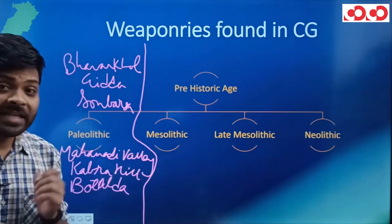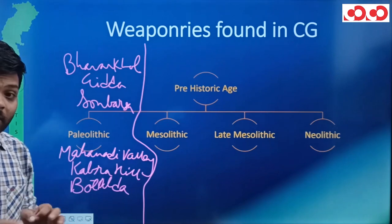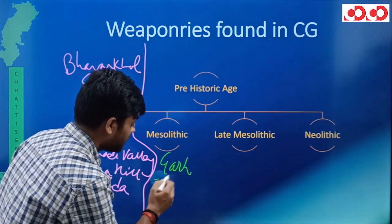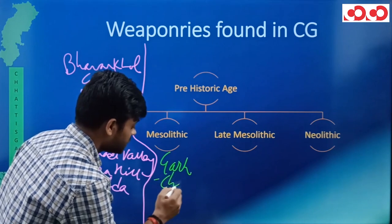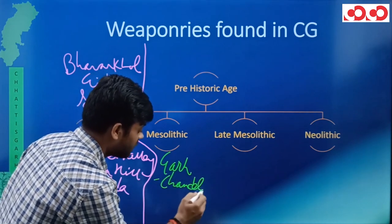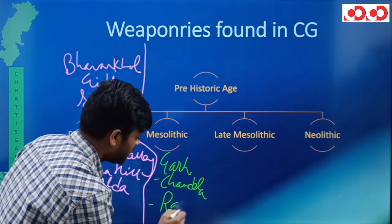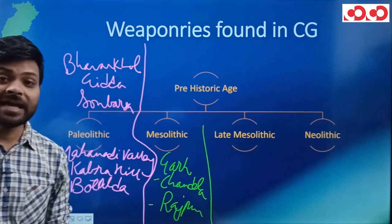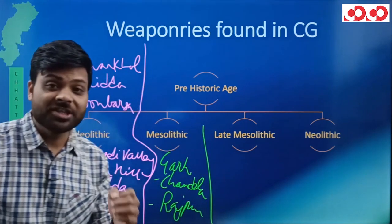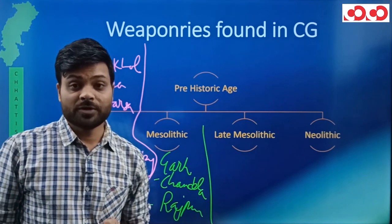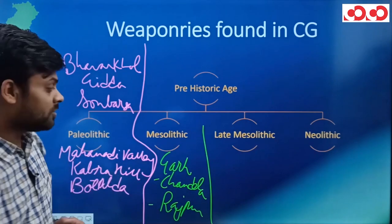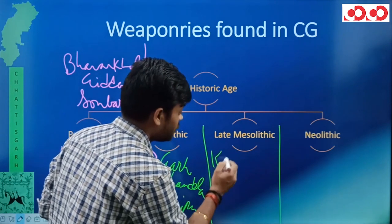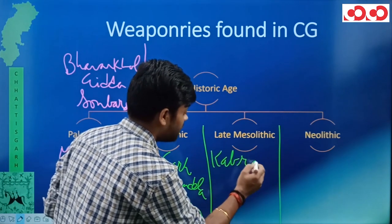Now let's talk about Mesolithic age. Mesolithic weaponries are found at: Gad Chandela and Rajpur. Clear? Where is Gad Chandela and Rajpur? This is the Late Mesolithic. And Late Mesolithic — Kabra Hill.